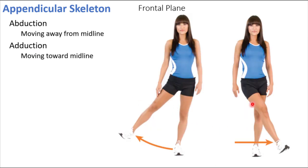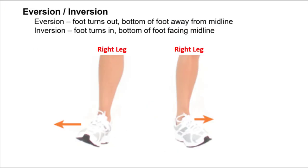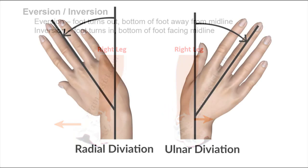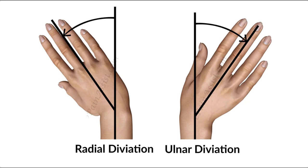Hip abduction and hip adduction are the standard frontal plane terms for the legs. There are two special considerations: for the foot you have eversion and inversion. Eversion means the plantar surface faces away from midline; inversion means the plantar surface faces inward. For the wrist, you have ulnar deviation — when the ulnar (pinky) side moves towards midline — and radial deviation — when the thumb (radial) side moves towards the forearm.